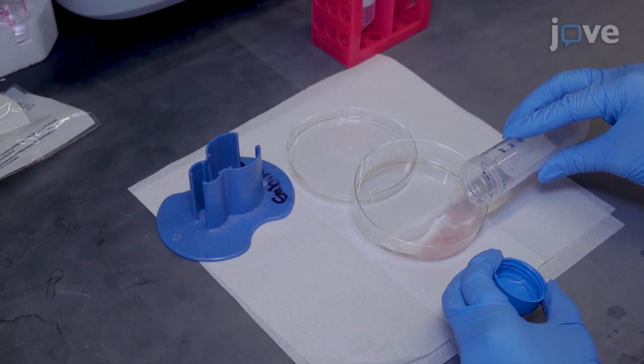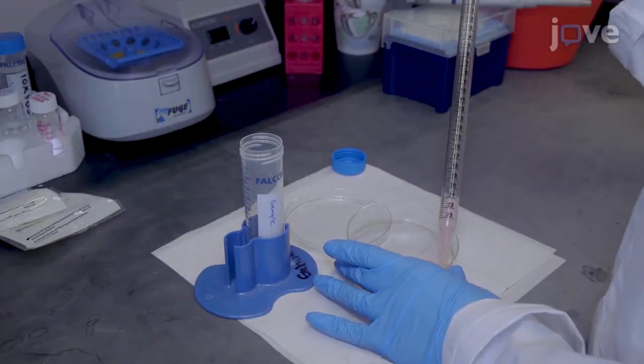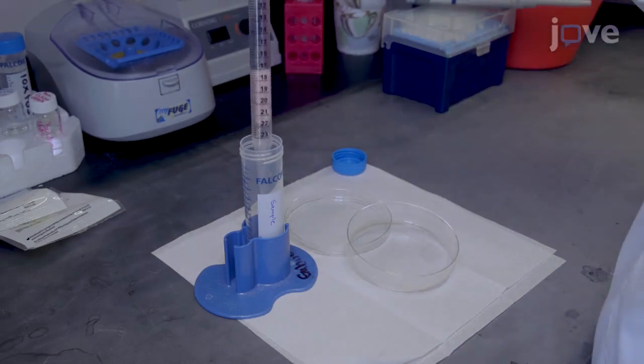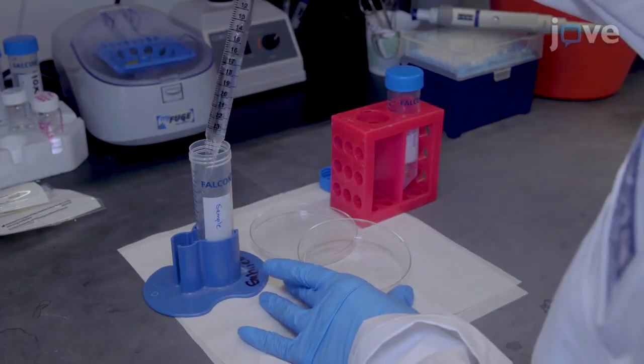Add about half the amount of prepared digestion buffer to the minced tissue and use a serological pipette to transfer the sample to a 50 milliliter centrifuge tube. Wash the dish with the remaining buffer and add it to the 50 milliliter tube.